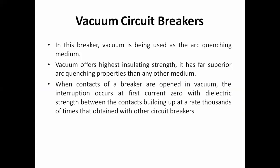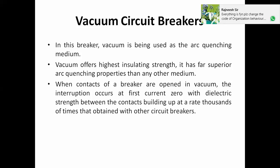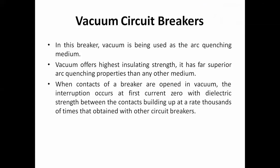Whenever you use vacuum as a quenching media, that circuit breaker is called a vacuum circuit breaker, commonly known as VCB — V stands for vacuum, CB stands for circuit breaker. Normally, in all grid stations, generating stations, and substations, the circuit breaker that we use is basically the VCB. Vacuum offers high insulating strength and has far superior arc quenching properties than any other media, which is why this is one of the most important arc quenching media.